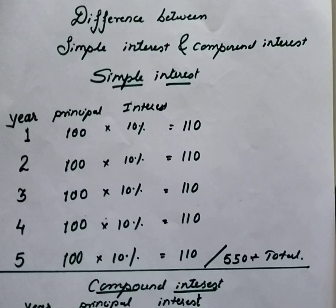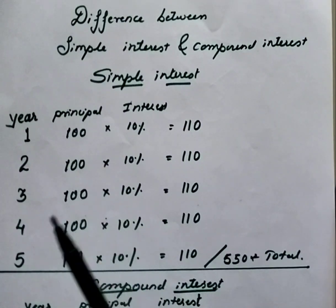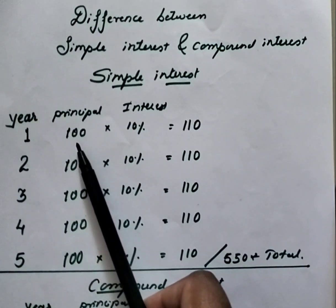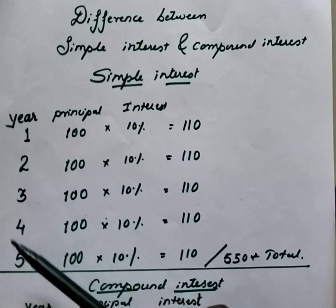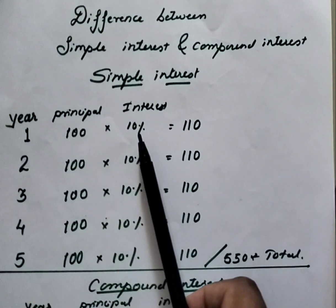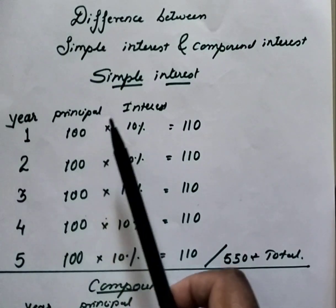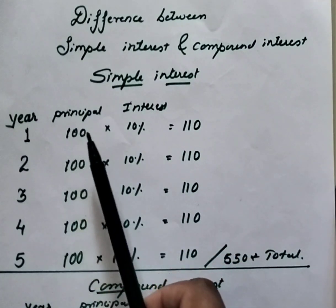Hello everyone, today I will explain in detail the difference between simple interest and compound interest. I have taken the example of simple interest. Someone — let's call them person X — has deposited 100 rupees in the bank for five years at 10 percent interest. For simple interest, on 100 rupees principal, he will get 10 percent interest.